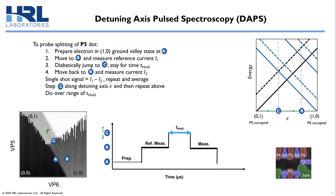So we developed DAPS — Detuning Axis Pulse Spectroscopy — to measure the energy spectra of dots. Andrew's talk focused on the time dynamics, and this talk will focus on the energy spectra. DAPS is performed on a pair of dots where one dot is coupled to the bath. I'll explain it for this P6-P5 dot pair, and I'm going to start with how we probe the splitting of the P5 dot.